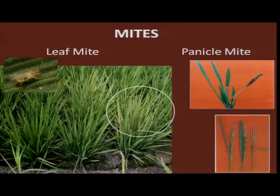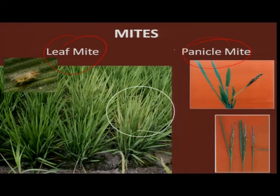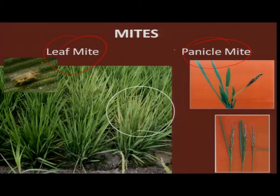Lastly, mites — a non-insect pest — of late, because of high nitrogenous application, are becoming very serious. Their attack in the early stage as leaf mite reduces the growth; there is no panicle formation and the whole plant looks like a grassy appearance. Even in the late stage, in the panicle formation stage, they attack, resulting in a very poor ear head and chaffiness. These are the economically important insect pests across the country.